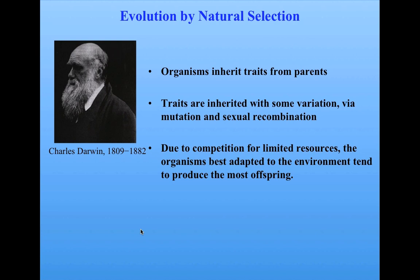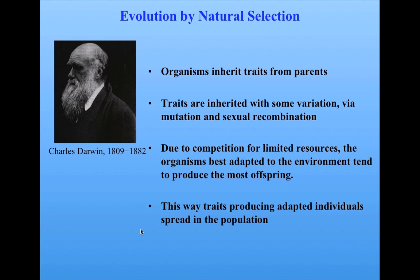Selection is due to competition. And that way, traits producing adaptive individuals spread in the population. Early on, computer scientists inspired by biology saw that this could all happen not just in nature, but also inside computers, where computer organisms, such as programs, could play the role of biological organisms and could evolve via Darwinian evolution.